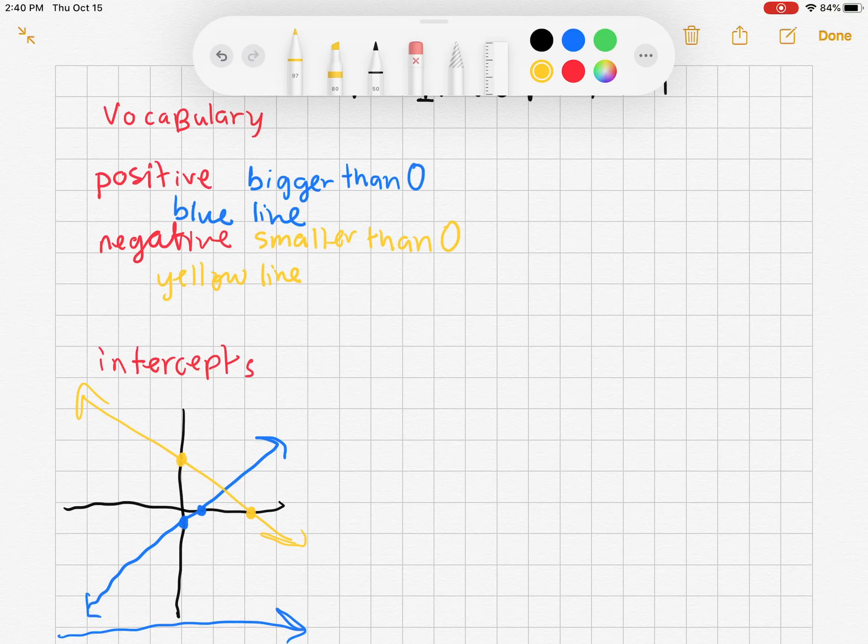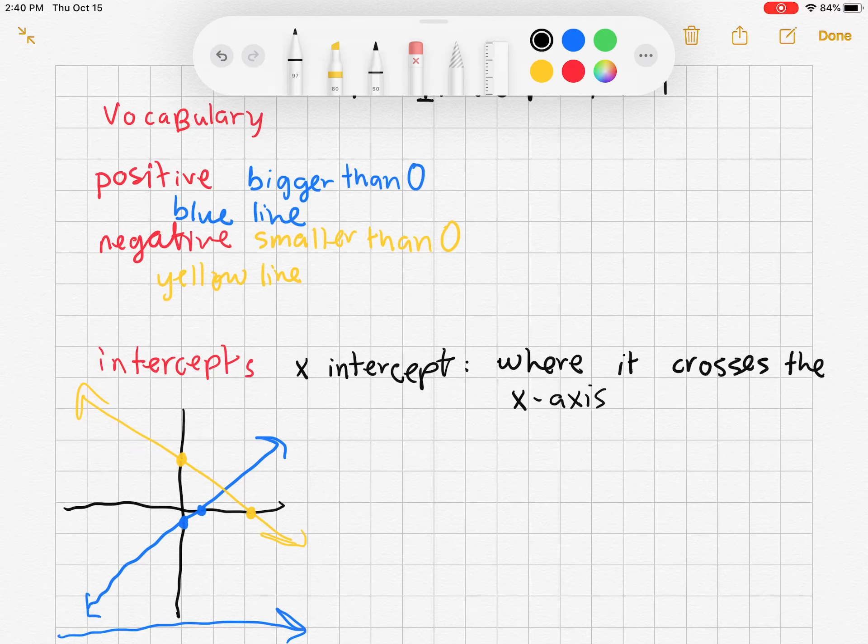Intercepts are where it crosses the axes. Notice we have two axes, so we're going to have an x-intercept where it crosses the x-axis and the y-intercept where it crosses the y-axis.